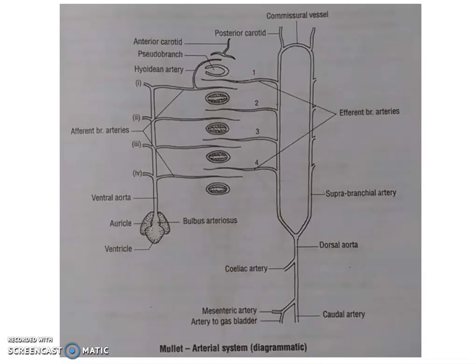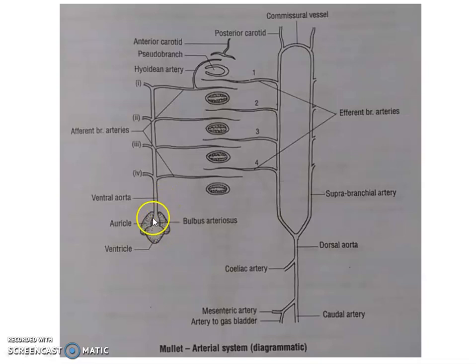Looking at the afferent branchial system first — the heart is placed on the ventral side, a characteristic feature. From the ventricle arises the ventral aorta, and the basal portion of the ventral aorta forms the bulbus arteriosus. So the afferent branchial system starts with the bulbus arteriosus and then continues to the ventral aorta. The bulbus arteriosus contains striated muscles, so it can dilate and recoil back to normal condition due to muscular activity.